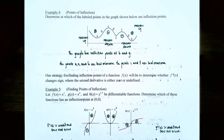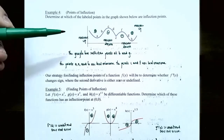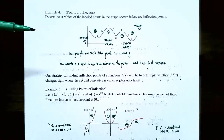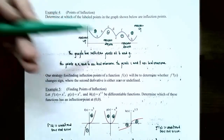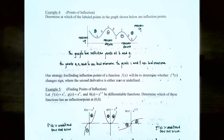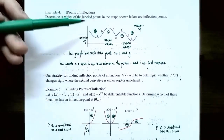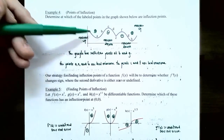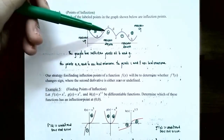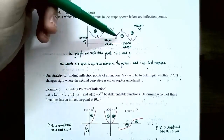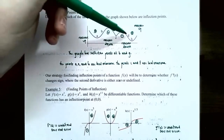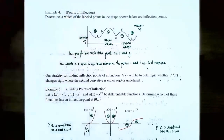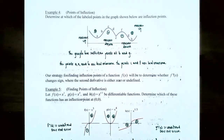Example 4: Points of inflection. Determine at which of the labeled points in the graph shown below are inflection points. The graph bends up and down at several different points: a, b, c, d, e, f, g, and h. The function is first concave up because the graph is bending up, then bending down, then bending down again, and then bending up again. The graph is concave up on several different intervals and concave down on several different intervals.